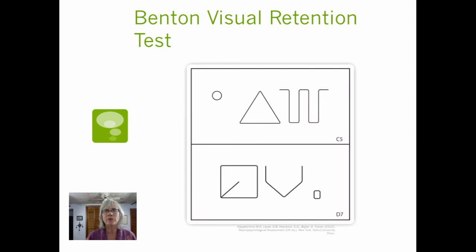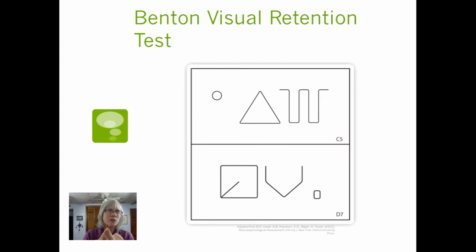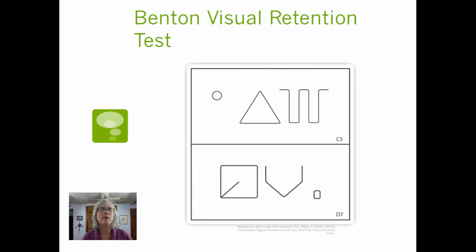We're not going to use all of these measures with any one person. Remember our funnel from the last video — we have a lot of data and we're going to try to do a number of things that help us narrow down what we're doing. When I'm seeing a child, for example, I might observe that child in the process, do a mental status exam, talk to that child and to that child's parents. If there's a question of intellectual functioning, I might do an intelligence test, and I might also do some sort of objective personality test. With children, I often use a child behavior checklist to get a feeling for how the parents believe this child is functioning.